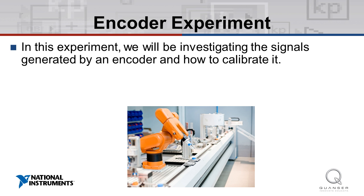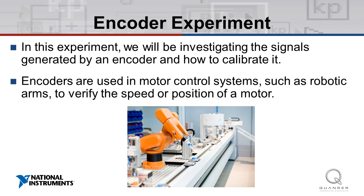The next experiment following those listed is the encoder experiment. Here, we'll be investigating the signals generated by an encoder and how to calibrate it. Encoders are used in motor control systems, such as robotic arms, to verify the speed or position of a motor.